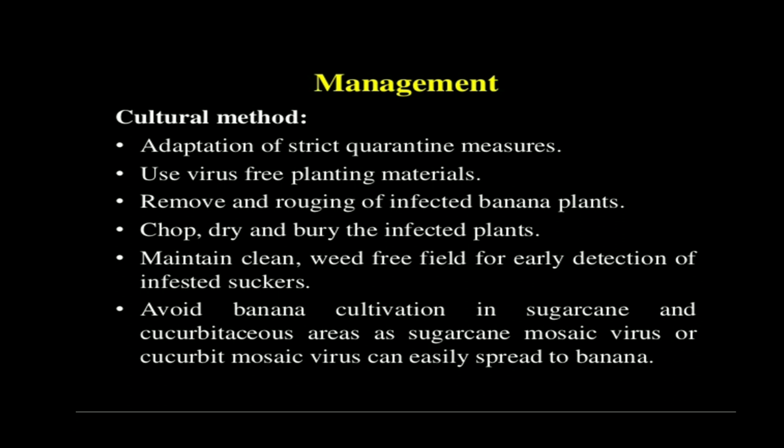Before plantation, what you have to do: remove all the infected banana plants. The aphids can grow and adopt different plants, so avoid banana cultivation near sugar cane and cucurbit areas, as Sugar Cane Mosaic Virus or Cucurbit Mosaic Virus can easily spread to banana also.